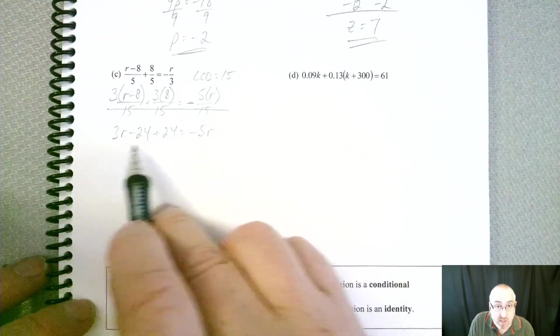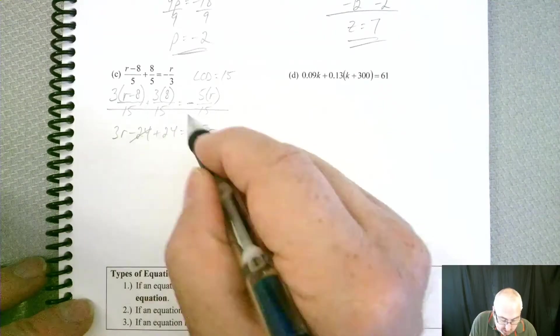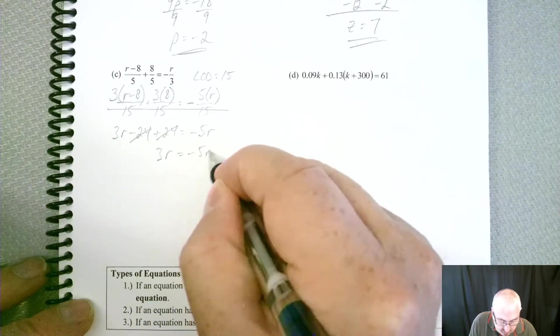Alright, so now if we simplify, well, we've got a minus 24 and a plus 24, so those are just going to cancel each other out completely. So you're left with 3R equals a minus 5R.